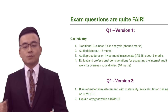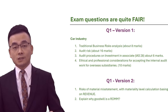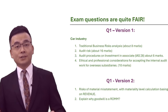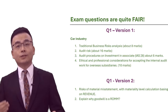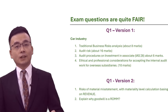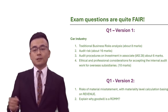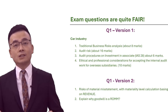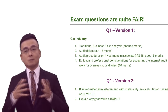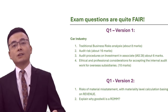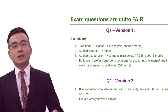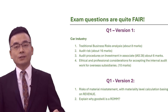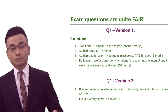Question one, part C is audit procedures on investments in associates according to IAS 28. You will need to demonstrate your understanding of whether or not the investor has significant influence over the associate. Number four is the ethical and professional considerations for accepting the internal audit work for overseas subsidiaries. Make sure that you bring in professional behavior and integrity — these kinds of ethical standards — and you will get reasonable marks.